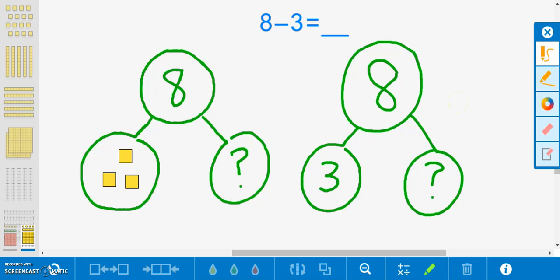Both number bonds clearly reflect the subtraction number sentence. To solve the problem, we can count up from three until we reach eight, our whole. After counting up, we know that the missing part to our whole is five, meaning that Ava has five pieces of M&Ms. Five M&Ms is the solution to our word problem.